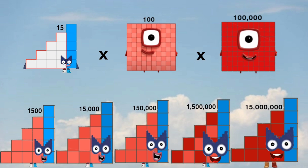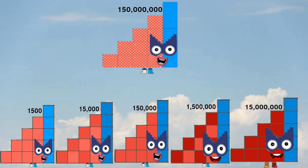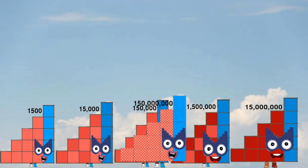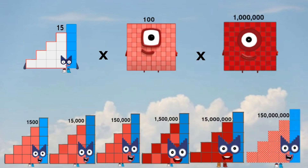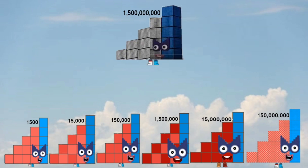15 times 100 times 100,000 equals 150,000,000. 15 times 100 times 1,000,000 equals 1,500,000,000.